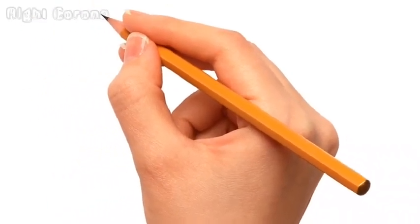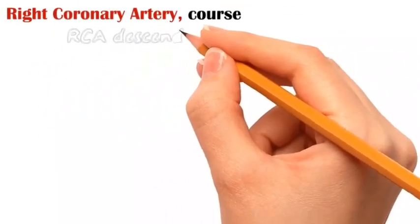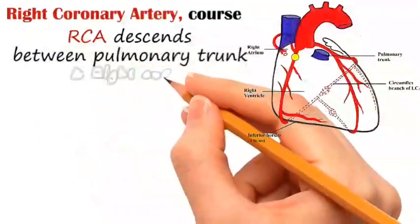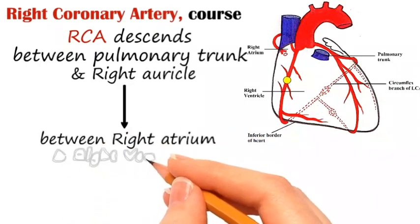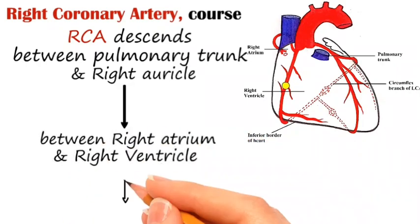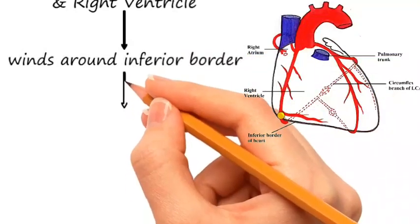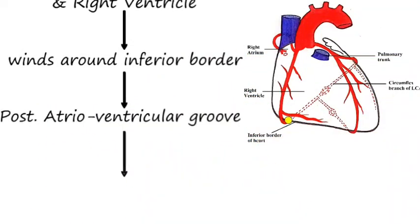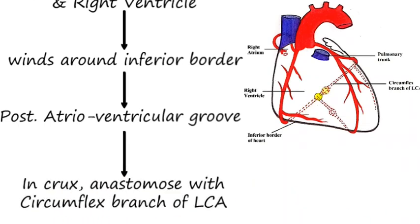The right coronary artery, after its origin, descends between the pulmonary trunk and the right auricle, then moves forward along the right atrium and right ventricle. It then winds around the inferior border of the heart, moves posteriorly along the atrioventricular groove, and at the crux anastomoses with the circumflex branch of the left coronary artery.